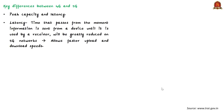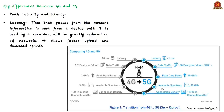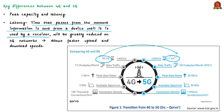Let us see some key differences between 4G and 5G. One of the biggest differences will be peak capacity and latency. The peak capacity of 5G is in gigabytes per second, compared to 4G in megabytes per second. Latency — which refers to the time that passes from the moment information is sent from a device till it is received by a receiver — will be greatly reduced on 5G networks. Low latency will allow faster upload and download speeds and quicker data transfer. If you have played PUBG, you would know that high latency is not suitable for gaming. So 5G, with low latency, will further enhance the gaming experience.